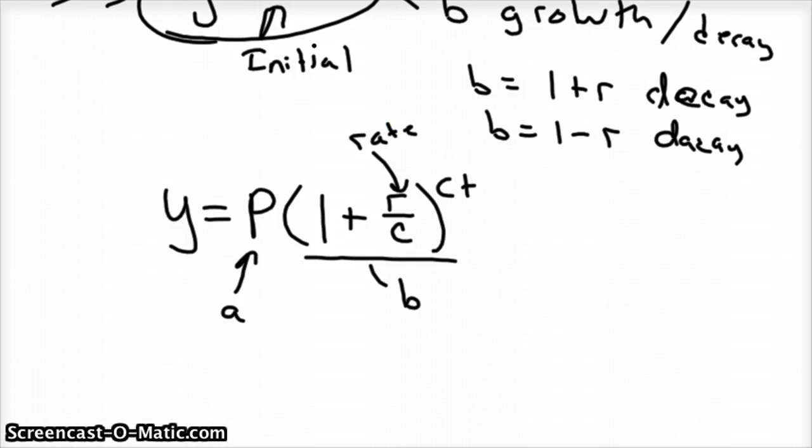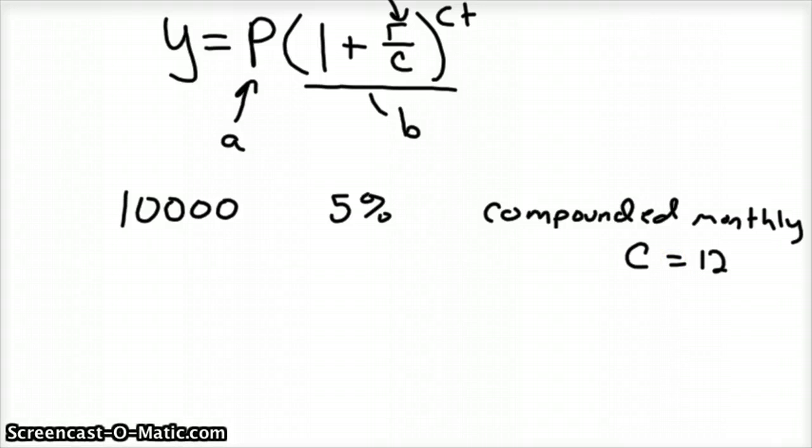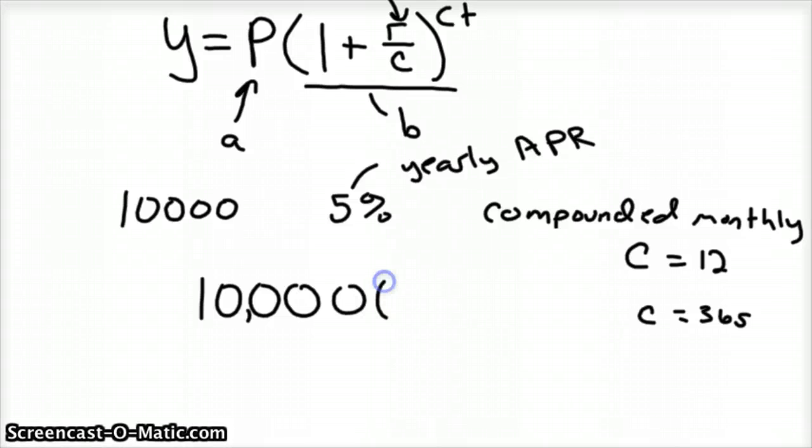So for example, if you had $10,000 invested at 5% interest compounded monthly, so every month we're going to compound the interest, credit cards compound daily. So compounded monthly means c is going to be 12. If you compounded daily, c would be 365 for every day of the year. Interest is always given in yearly increments, that's APR, annual percentage rate. So what this equation would look like would be 10,000 times 1 plus 0.05 over 12, for compounded monthly, to the 12 times t, where t is the number of years.